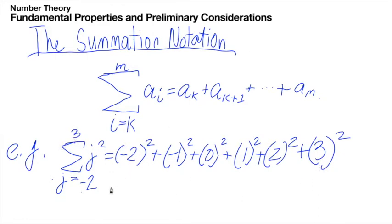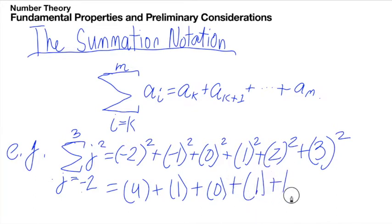We're going to operate this. Minus 2 squared is 4, minus 1 squared is 1, 0 squared is 0, 1 squared is 1, 2 squared is 4, and 3 squared is 9. If we add all of these values, we have 4 plus 1 plus 1 equals 6, plus 4 equals 10, plus 9 equals 19. And this is our answer, 19.